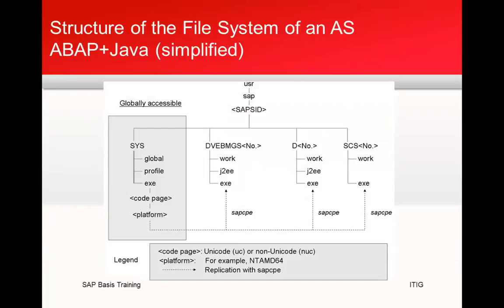The directory structure for an SAP system is under /usr/sap, then the SAP SID, with directories like sys, global, profile, and exe. Then you have DB, DVEBMGS, 000 or 01 depending on the system number. Here D stands for dialog, V is update, E is enqueue, B is batch, M is messaging, G is gateway, and S is spool. This is the directory structure for an ABAP and Java system.